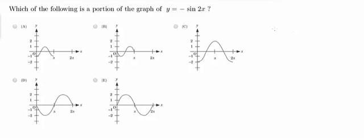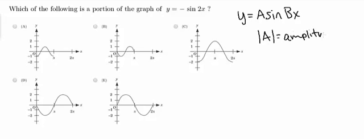So this is actually in the form y equals A sine Bx, where the absolute value of A is equal to the amplitude and the period is equal to 2 pi over B.